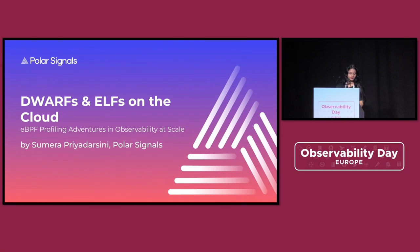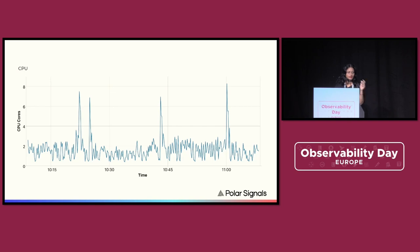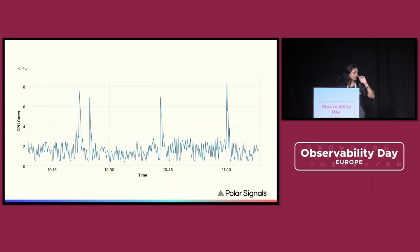So this is a graph, a metrics graph. It shows the CPU core usage against time. You can see a normal baseline there, but there are these spikes. These random spikes are basically OOM-kills — the process takes up too much memory and programs crash.